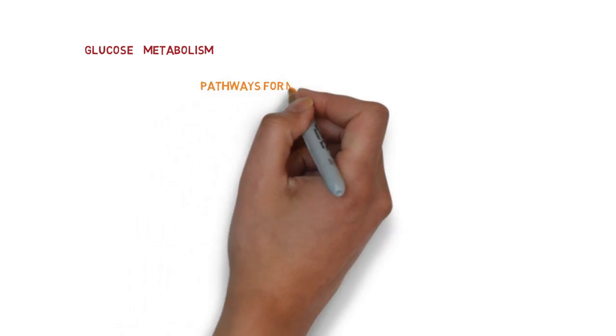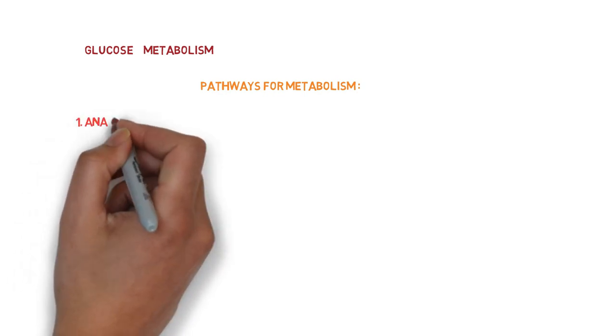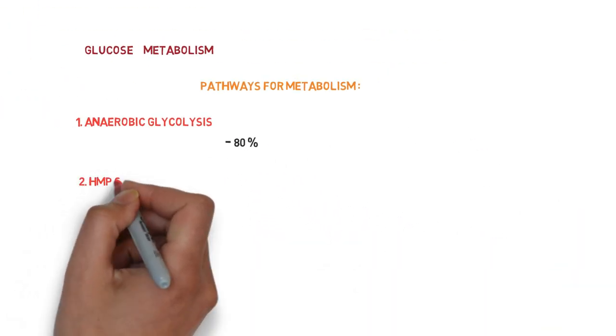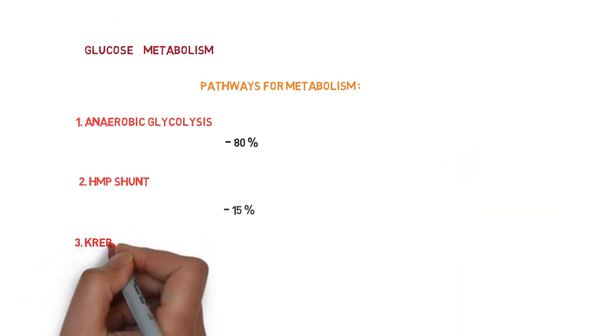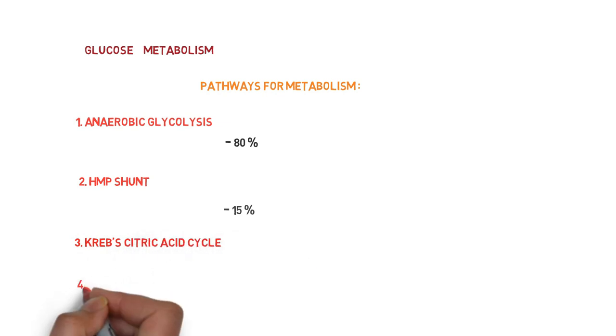Then the glucose is rapidly metabolized through four pathways. The first one is anaerobic glycolysis, or we can say glycolytic pathway, in which 80% of glucose is metabolized. Second one is hexose monophosphate pathway, in which nearly 5% of glucose may be metabolized. The third one is Krebs citric acid cycle, and the fourth one is sorbitol pathway.